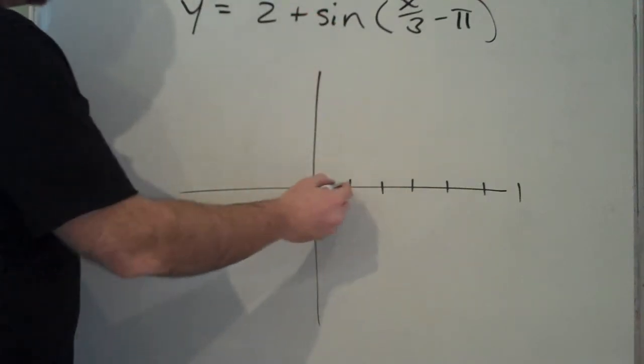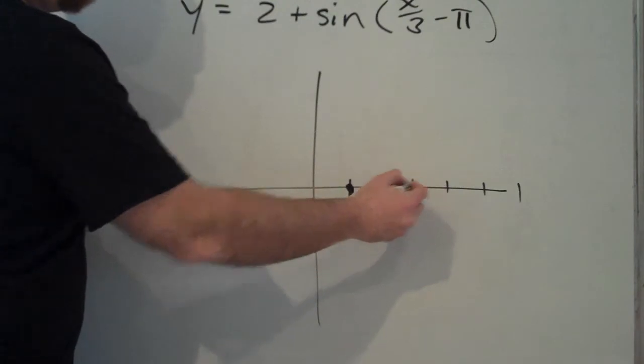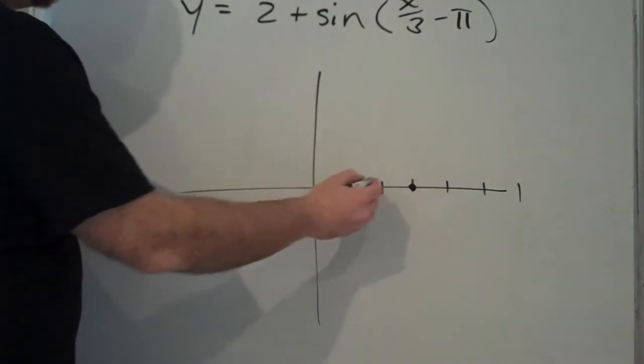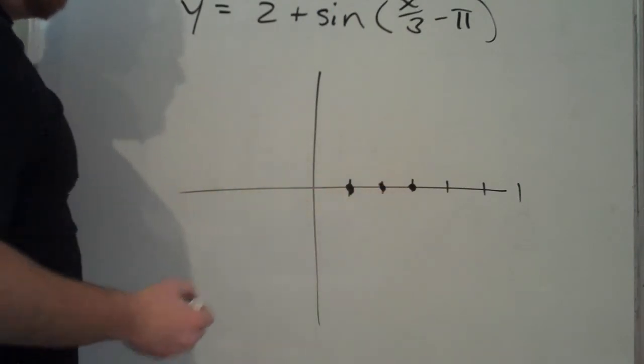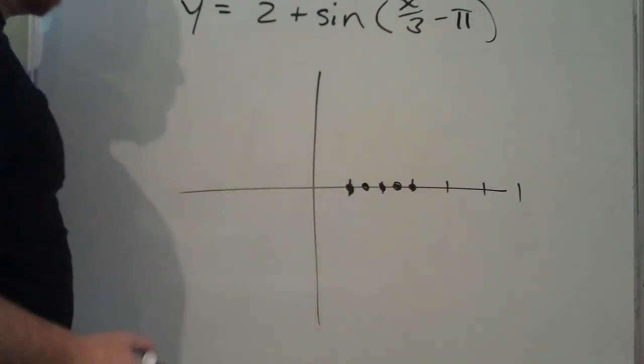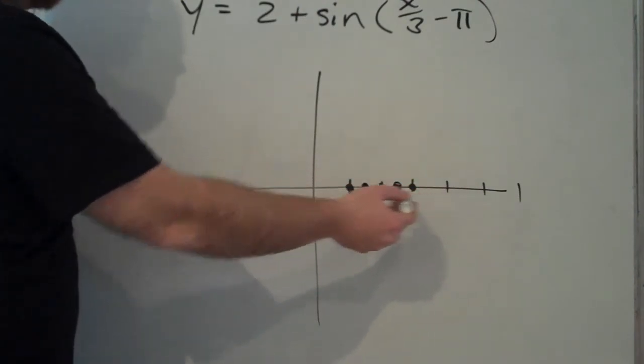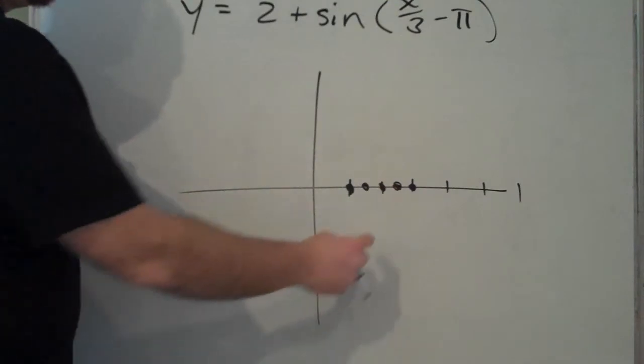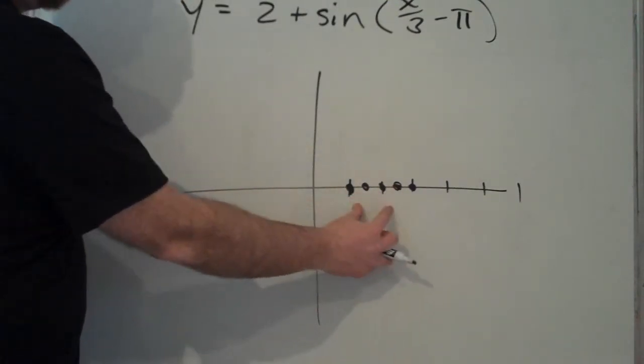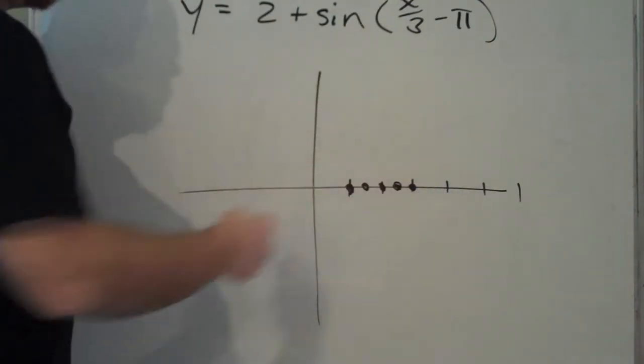So since we're doing a sine graph, we know that our first point is at three pi over two. We know that our last point is at nine pi over two. We know that directly in between these two points, there's another critical point. And directly in between these two, there's one, and there's one here. So the point that I'm trying to make is even if we can't make our scale the same as our change in x, there's always one point in between these two. So it's really a sequence of midpoints between these critical points.